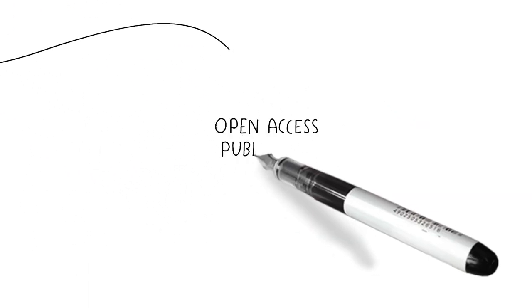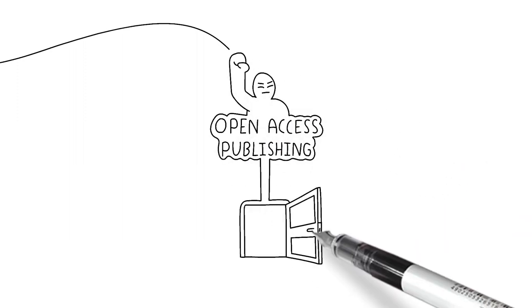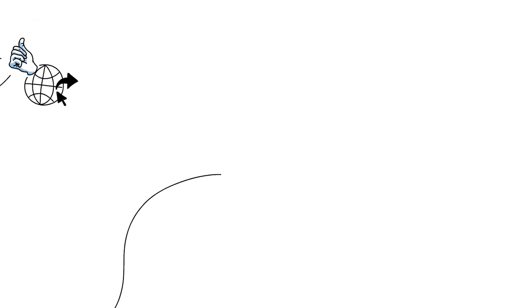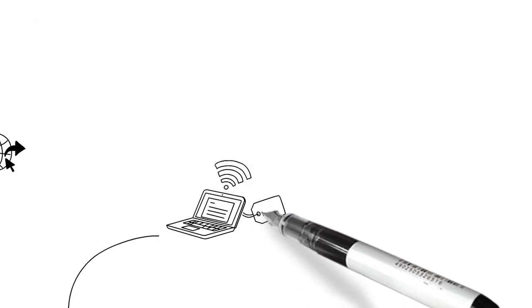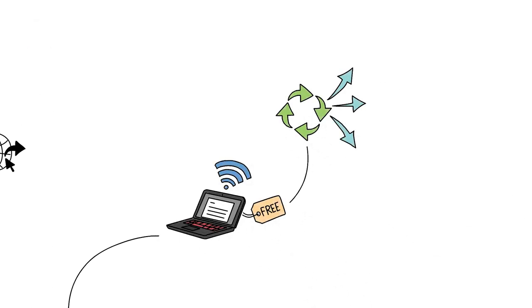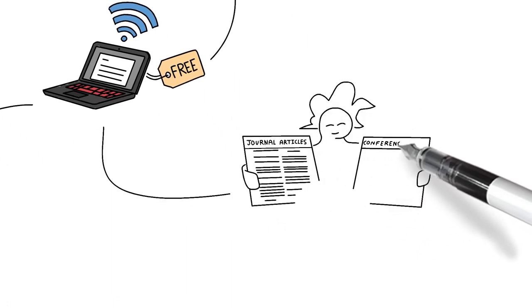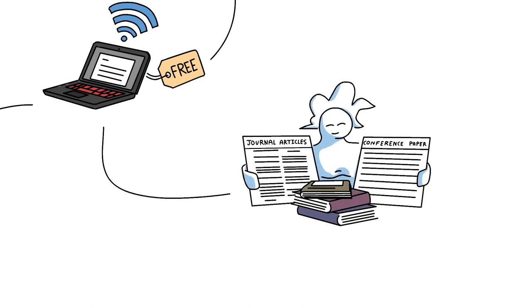In response, a movement has arisen to push for open access publishing. Open access means a piece of work is published digitally, online, and is free to read, reuse, and share. Open access can refer to pretty much any type of academic work, for example, journal articles, conference papers, and monographs or other books.